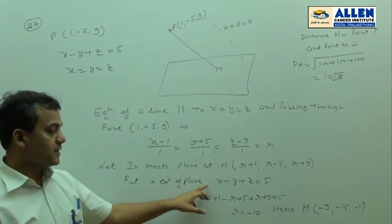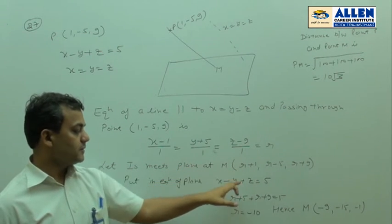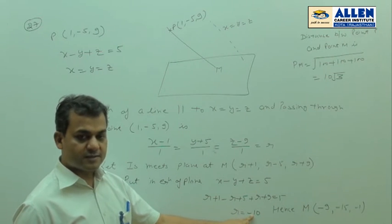As this point M lies on the plane x minus y plus z equal to 5, definitely this point will satisfy this equation. So, putting these coordinates in equation of plane, we get R equals minus 10.